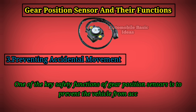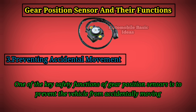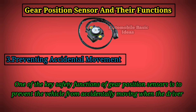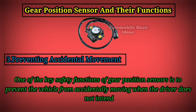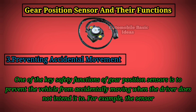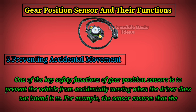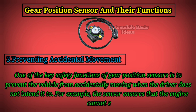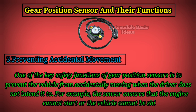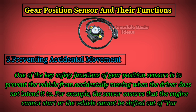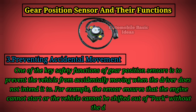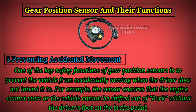Three: preventing accidental movement. One of the key safety functions of gear position sensors is to prevent the vehicle from accidentally moving when the driver does not intend it to. For example, the sensor ensures that the engine cannot start, or the vehicle cannot be shifted out of park, without the driver's foot on the brake pedal.